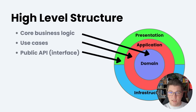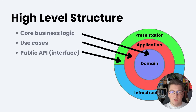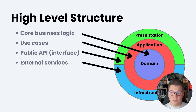This could be a REST API, a Blazor application, a gRPC service — it doesn't really matter. The role of the presentation layer is to take in an incoming request and then delegate it to the appropriate use case. We also have the infrastructure layer, which deals with external services.